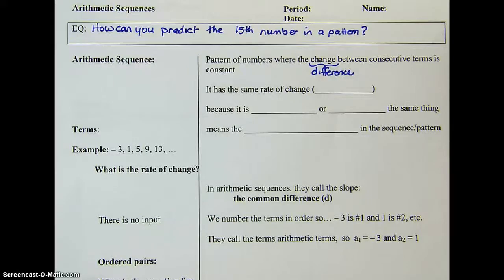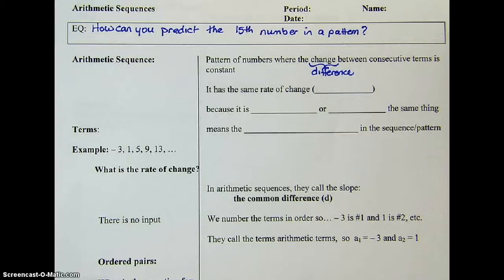Today we're going to do something that seems completely different from what we've been doing in this chapter, which is writing equations of lines. So today we're going to do arithmetic sequences, and our essential question is: how can you predict the 15th number in a pattern? Even though this is called arithmetic sequences and it sounds different, it really is just a line, and you're going to see how this works.